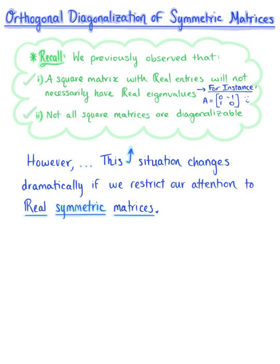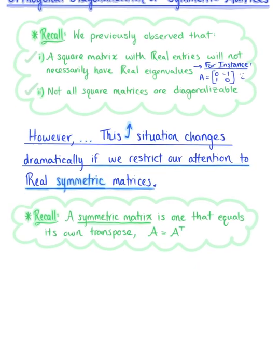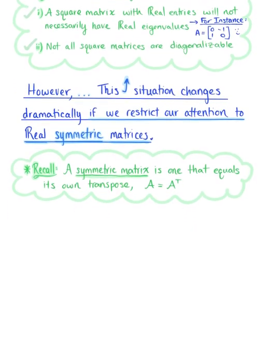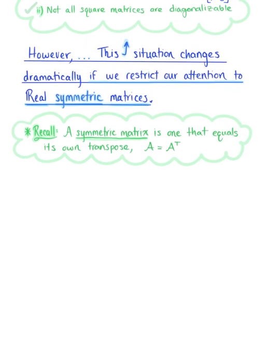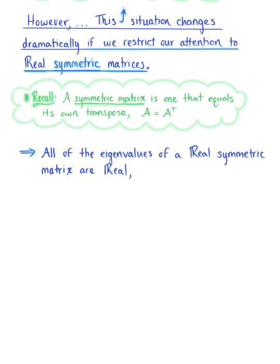Let's quickly recall that a symmetric matrix is one that equals its own transpose. If we restrict our observation to real symmetric matrices, we're going to observe that all eigenvalues of a real symmetric matrix are real, and such a matrix is always diagonalizable.